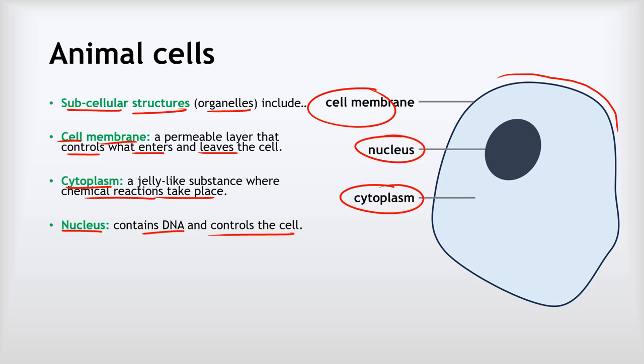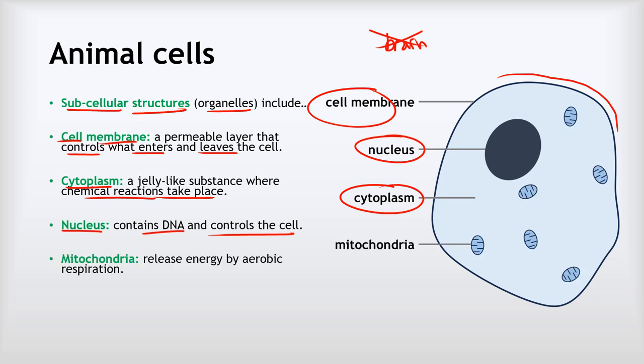And you might hear in some places that the nucleus gets called the brain of the cell - never ever say that. We are not going to say it's the brain of the cell because it's not a brain, it's not made of nerves and it can't think, but it does control what the cell does, so we say it controls the cell. Next we have the mitochondria. You might see on the internet these often get called the powerhouse of the cell - that's not a bad description, but that won't get marked in an exam. So the mitochondria, these are organelles that release energy by aerobic respiration.